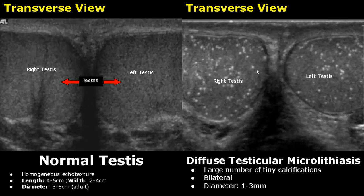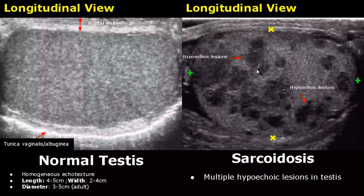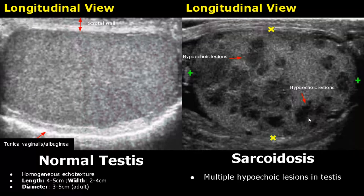In the case of testicular sarcoidosis, the testis contains multiple hypoechoic structures spread throughout the organ.